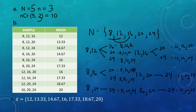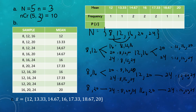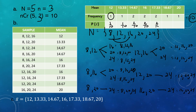We count the frequency of each mean. The frequencies are: 1 for 12, 1 for 13.33, 2 for 14.67, 2 for 16, 2 for 17.33, 1 for 18.67, and 1 for 20 — totaling 10. The probabilities are therefore: 1/10, 1/10, 2/10, 2/10, 2/10, 1/10, and 1/10.